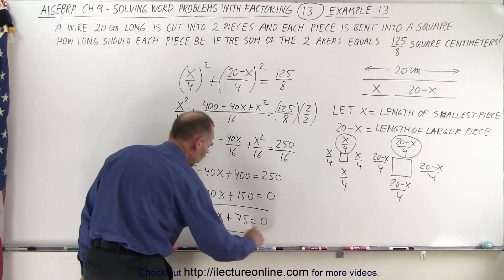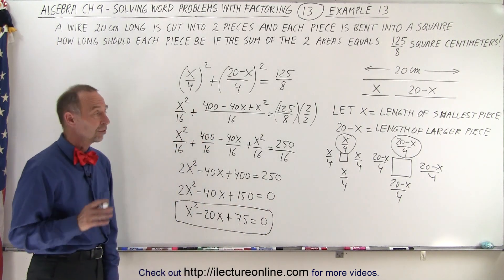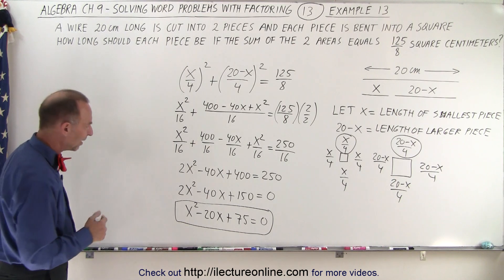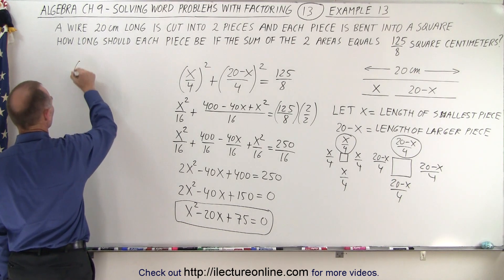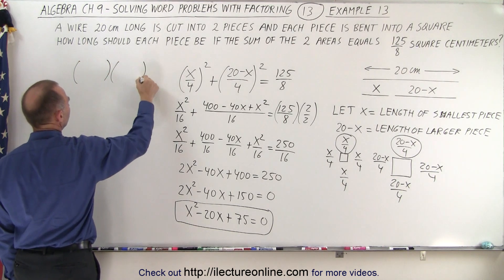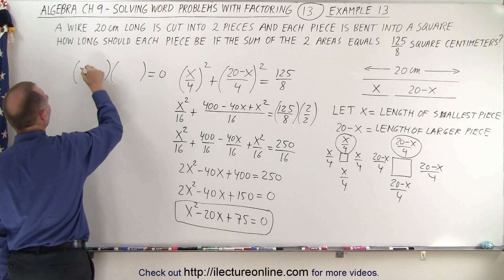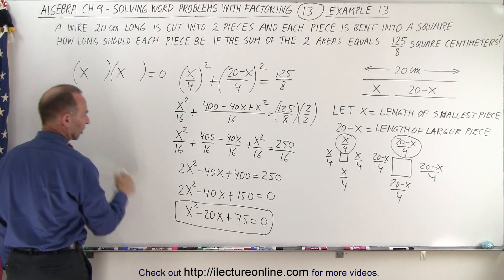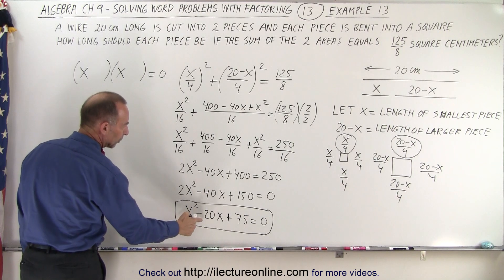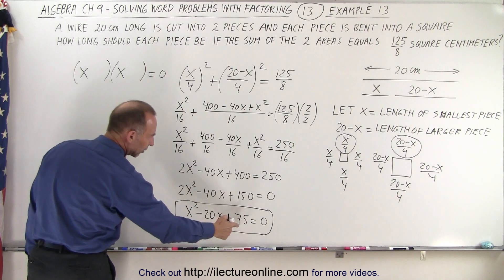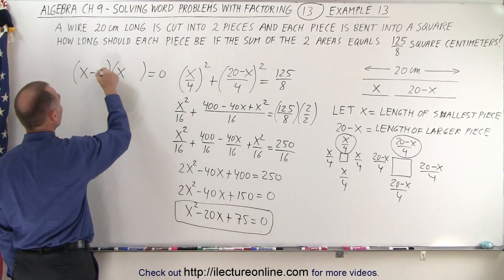And this equation needs to be solved for x to solve our problem. So now we need to factor that, and that shouldn't be too hard to factor. So let's try this. We have an x and an x because x times x gives us x squared. Now notice if the middle term is negative and the third term is positive, that means they both must be negative.